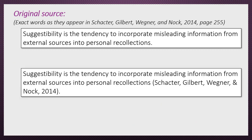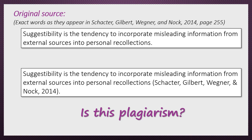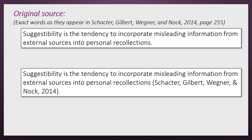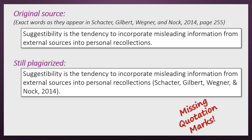So how about this? You write: "Suggestibility is the tendency to incorporate misleading information from external sources into personal recollections" (Schachter, Gilbert, Wagner, and Nock, 2014). Is this plagiarism? This version is still plagiarized because it is missing quotation marks. So you're acknowledging to the reader that you got the information from the source, but not that the words came directly from that source.